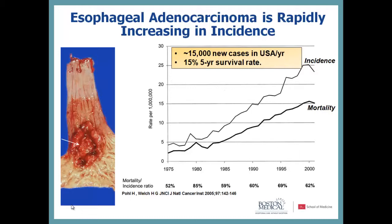This is a typical esophageal adenocarcinoma that's been resected from the patient. What you see up here is the tubular esophagus, the stomach is down here, and this is obviously the cancer. These tumors occur at the gastroesophageal junction.